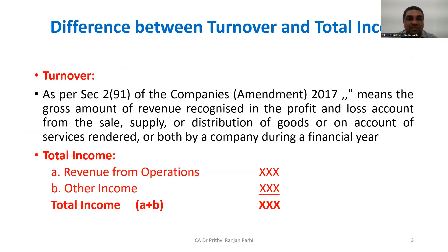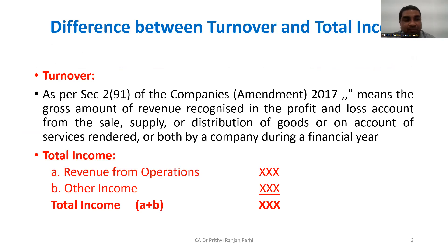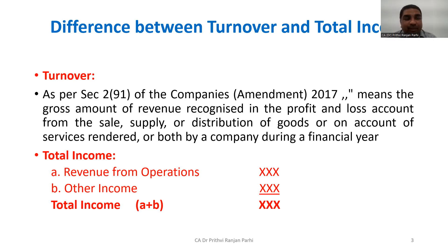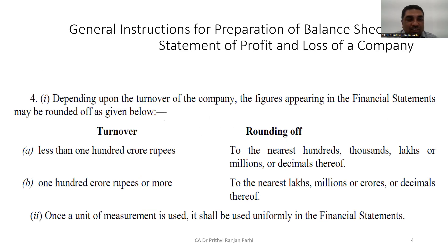It may be necessary to understand the difference between total income and turnover. Referring to Section 2(91) of the Companies Amendment Act 2017, turnover means the gross amount of revenue recognized in the profit and loss account from sales, supply, or distribution of goods, or on account of services rendered. That covers operational income only. But total income includes operational revenue as well as other incomes — for example, interest income or miscellaneous income — all added together to arrive at the total income, on the basis of which rounding off is decided.